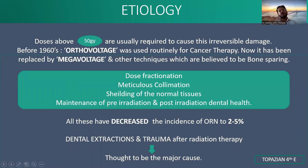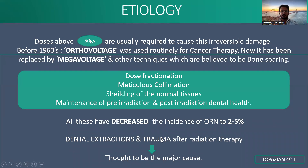Radiation doses above 60 Gray are usually required to cause this irreversible damage. Before 1960 we used orthovoltage and currently we use megavoltage. Along with this we use various bone-sparing techniques so that adjacent tissues are less irradiated and damage to adjacent tissue is less. The various techniques include dose fractionation, decreasing the dose, and meticulous collimation using shielding of normal tissue. All of this has decreased the incidence of osteoradionecrosis to 2 to 5 percent. Dental extractions and trauma are the major cause of osteoradionecrosis after radiation therapy.